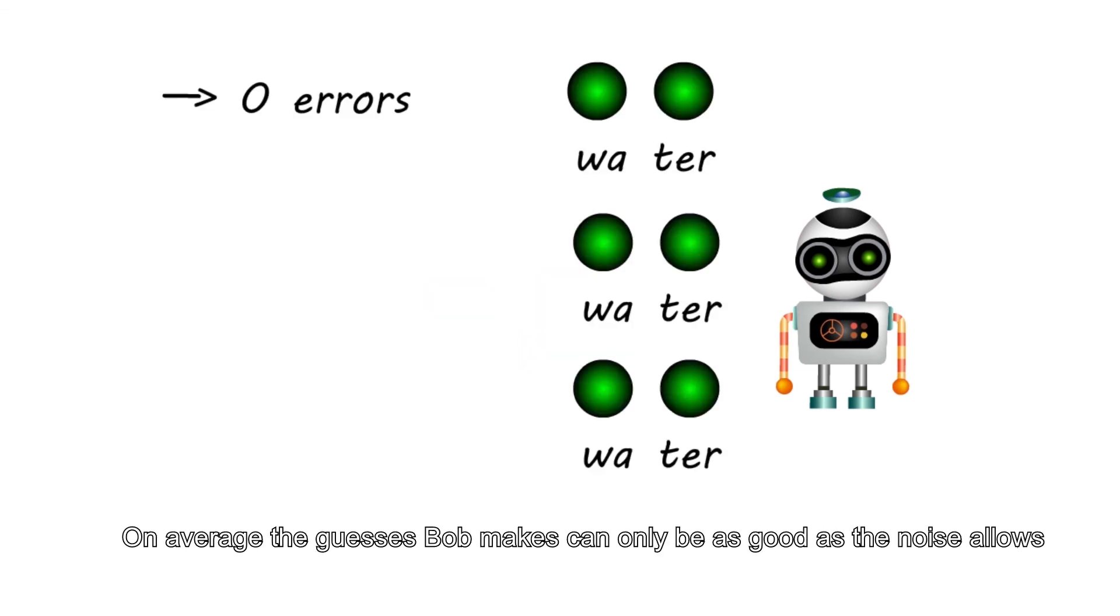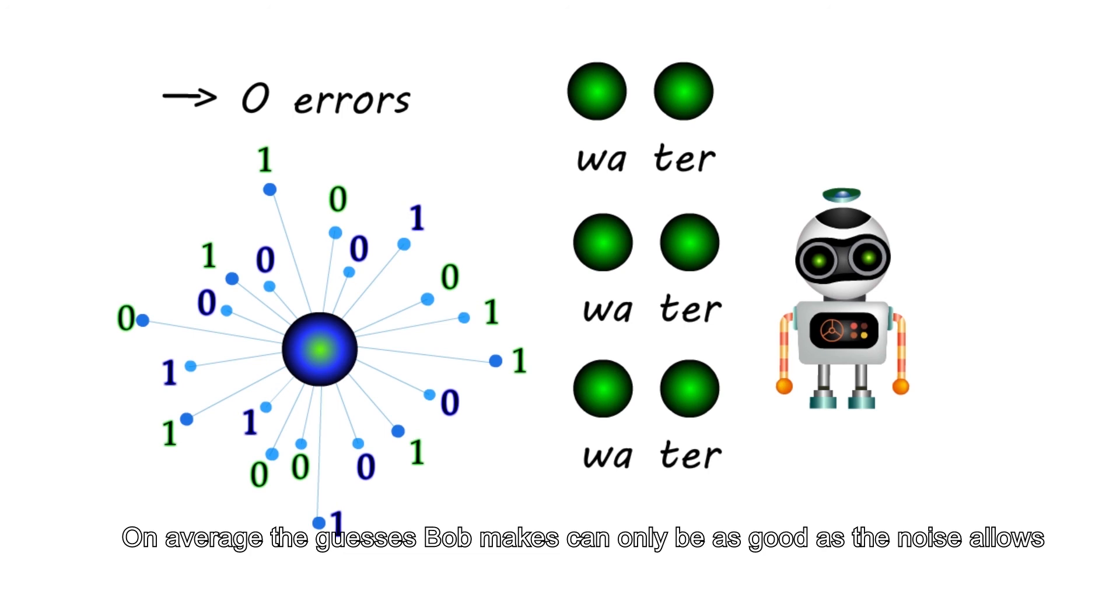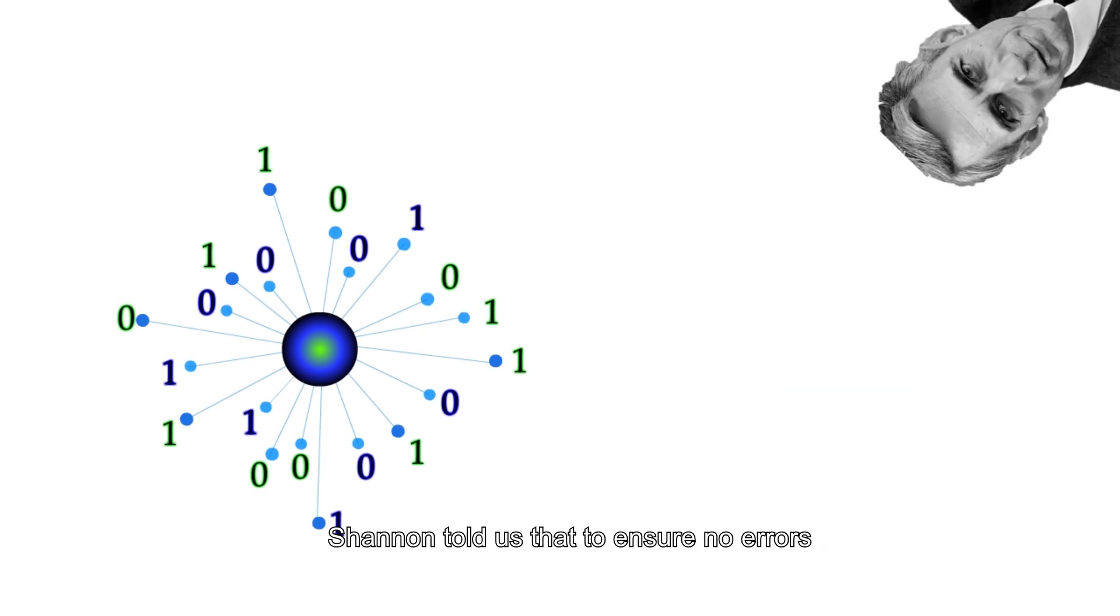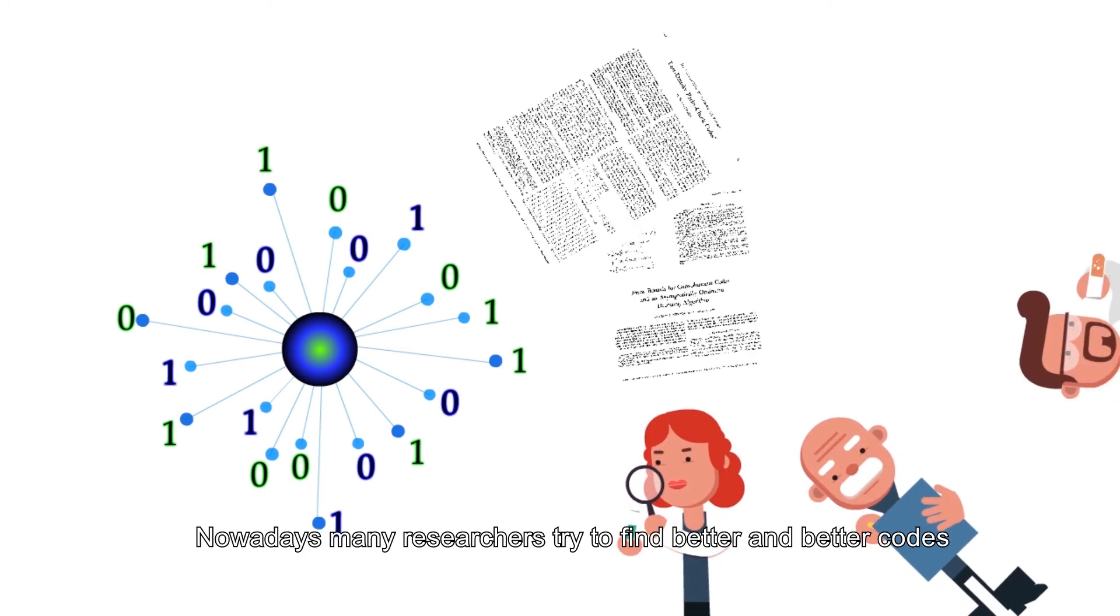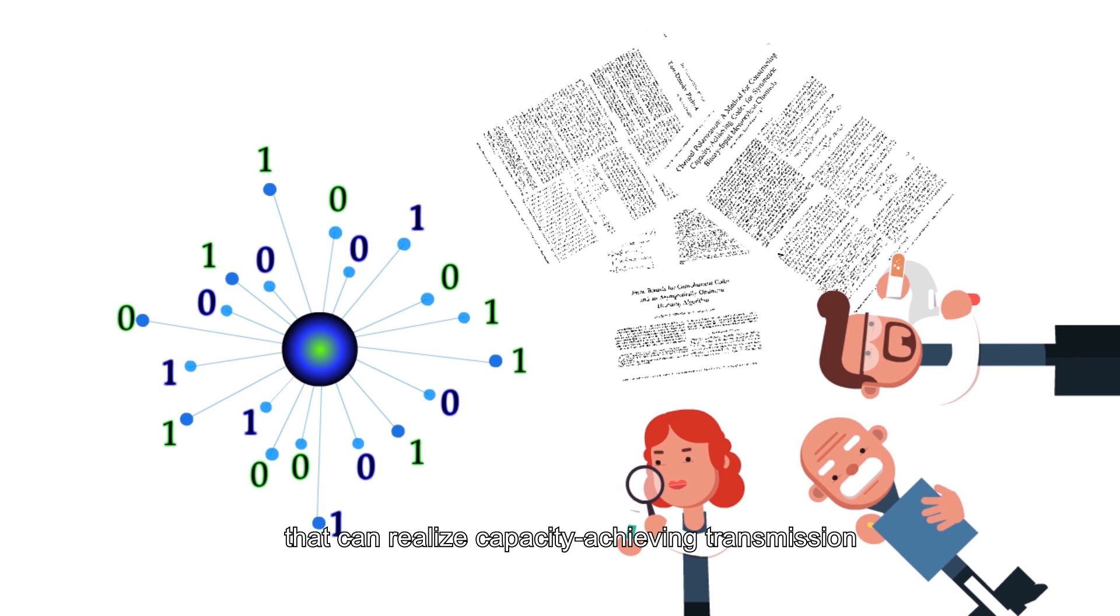On average, the guesses Bob makes can only be as good as the noise allows. Shannon told us that to ensure no errors, the information rate we transmit should be no greater than the capacity. Nowadays, many researchers try to find better and better codes that can realize capacity-achieving transmission.